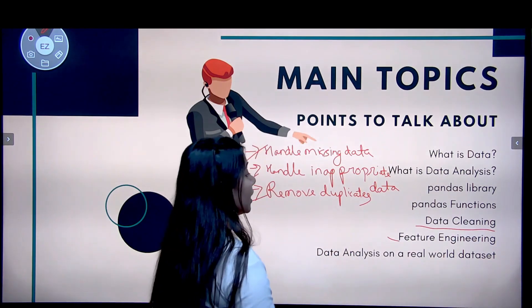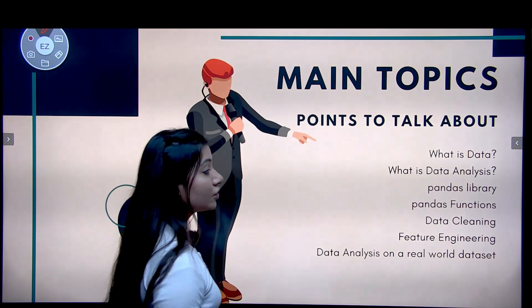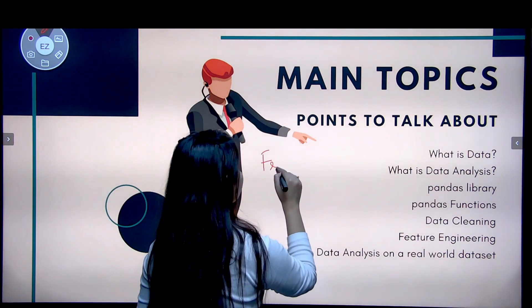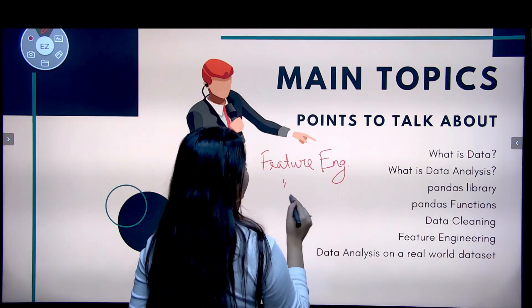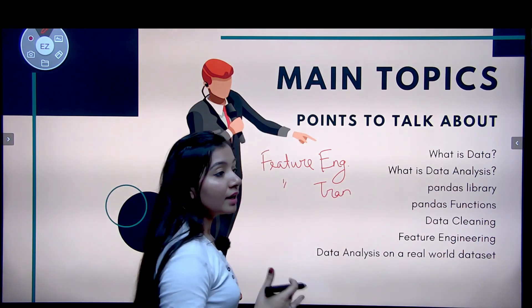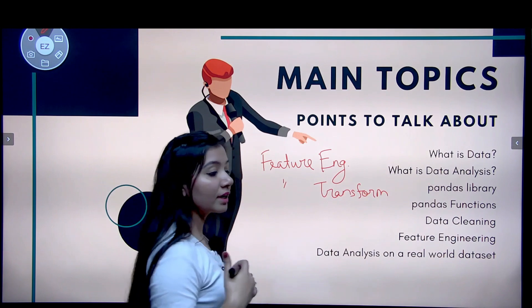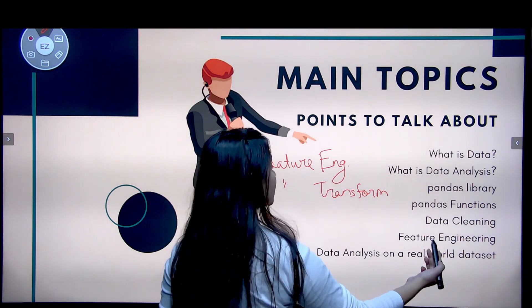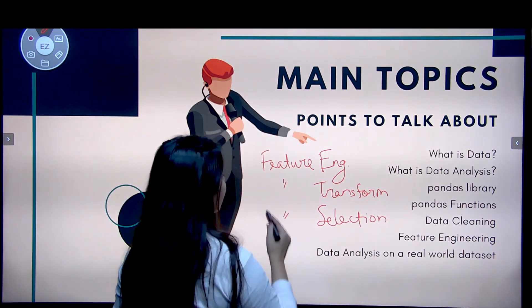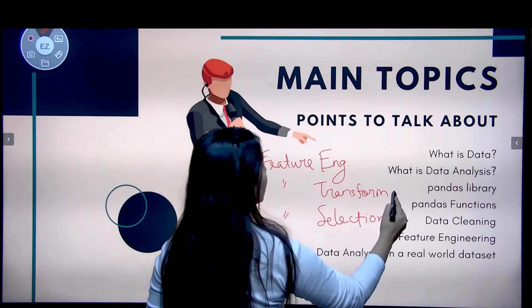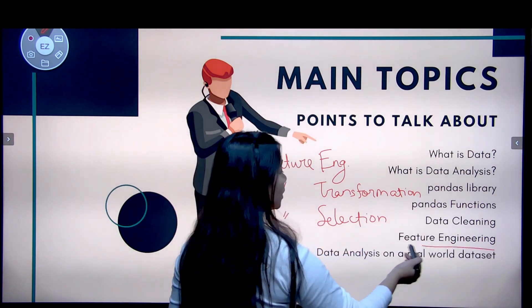Next we will see feature engineering. In this topic we will discuss three things: feature engineering, feature transformation — in which we perform standard scaling or min-max scaling, how we can normalize data and change the scales of data — and finally feature selection. These three things we will cover in the feature engineering topic.